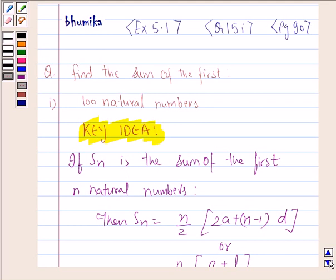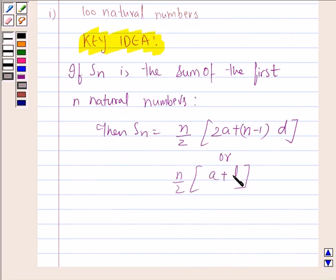So we will be using this formula: Sn is equal to n by 2 into 2A plus n minus 1 into D, or Sn is equal to n by 2 into A plus L, where A is the first term and L is the last term. And here A is the first term and D is the common difference.